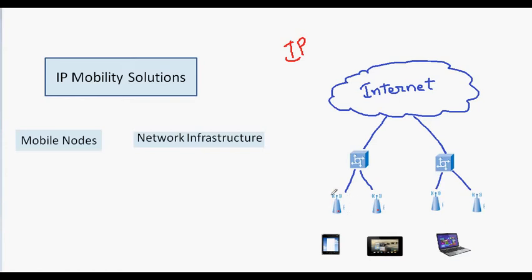From this part of the network, the mobile node is moving to the other part of the network. The mobile node maintains an active connection when it is moving from one access router to the other access router. One of the solutions is Mobile IP or Mobile IPv6.